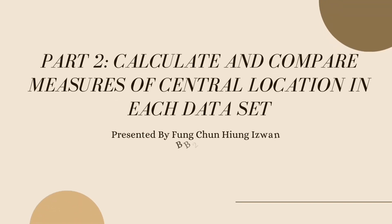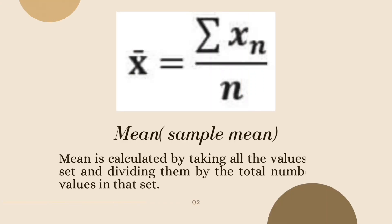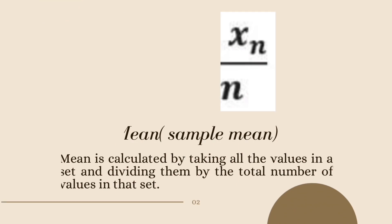Assalamualaikum and hi, my name is Fung Chung Kim Izuan, my matrix number is BB22110285. I will continue to present about calculating and comparing measures of central location in each dataset. The central location includes mean, median, and mid-range. First and foremost, we need to find the mean, specifically the sample mean. Mean is calculated by taking all the values in the set and dividing them by the total number of values in the set for domestic and international.